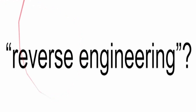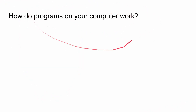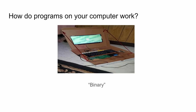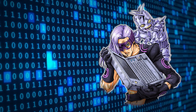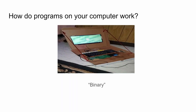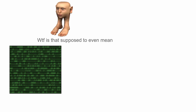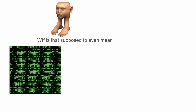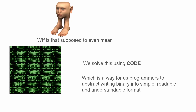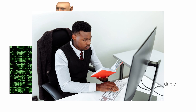The important question: what the fuck is reverse engineering? How do programs on your computer work? Your computer operates on binary — it basically takes zeros and ones, does some magical mystical things with it, and creates your output. Binary is cool and all, but then you get a human who's just like, 'What the fuck is this supposed to mean? I can't understand this at all — zero, zero, one, one, one, what the fuck?' So we use code. Code is a way for us programmers to abstract into writing something that is simpler, more readable and understandable.